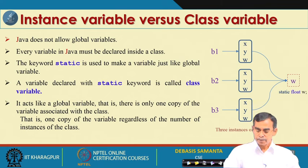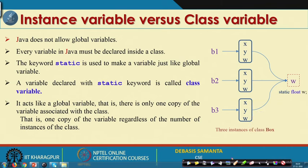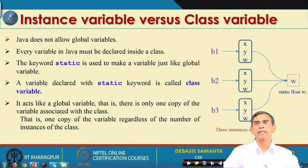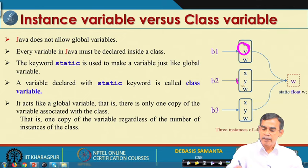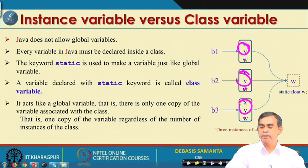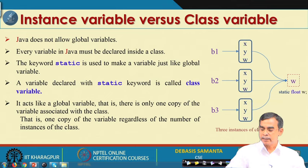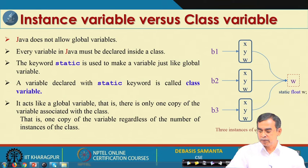Here is an example: suppose b1, b2, b3 are three objects belonging to class Box. If we declare W as static — for example, 'static float w' — then W becomes a class variable. This means X and Y remain instance variables, while W is the static or class variable, meaning only one copy exists shared among all three objects.